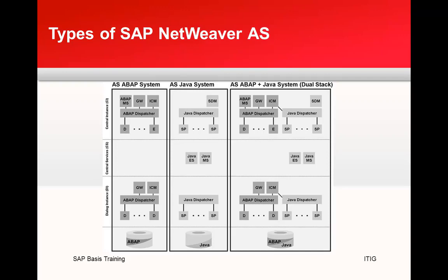Types of SAP NetWeaver application servers: AS ABAP system, AS Java system, and a dual stack system with both ABAP and Java stacks. SAP has moved away from the dual stack strategy — PI currently exists as both dual stack and Java-only versions. Only Solution Manager remains dual stack for now. In the AS ABAP system, there are three layers: the central instance, the central services instance, and dialog instances.